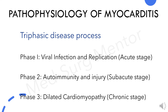Now let's move on to the pathophysiology of myocarditis. It is divided into three phases: Phase 1 — viral infection and replication; Phase 2 — autoimmunity and injury; and Phase 3 — dilated cardiomyopathy. These are also known as the acute stage, subacute stage, and chronic stage, respectively.